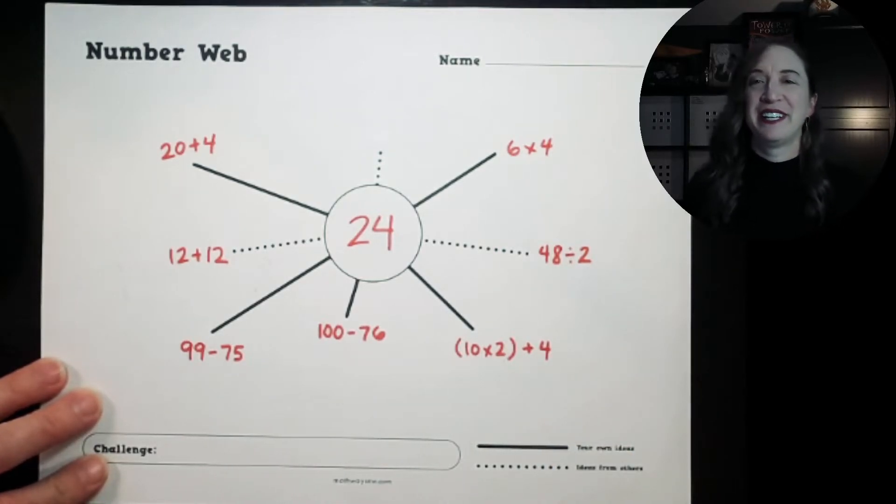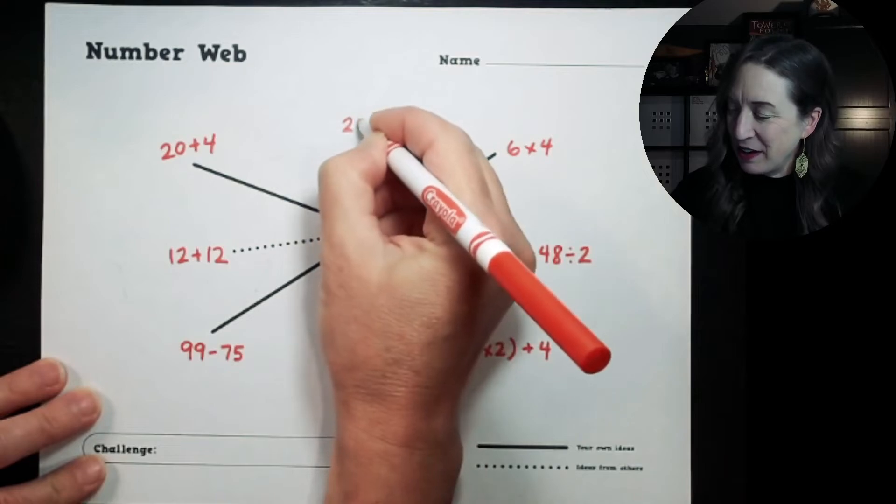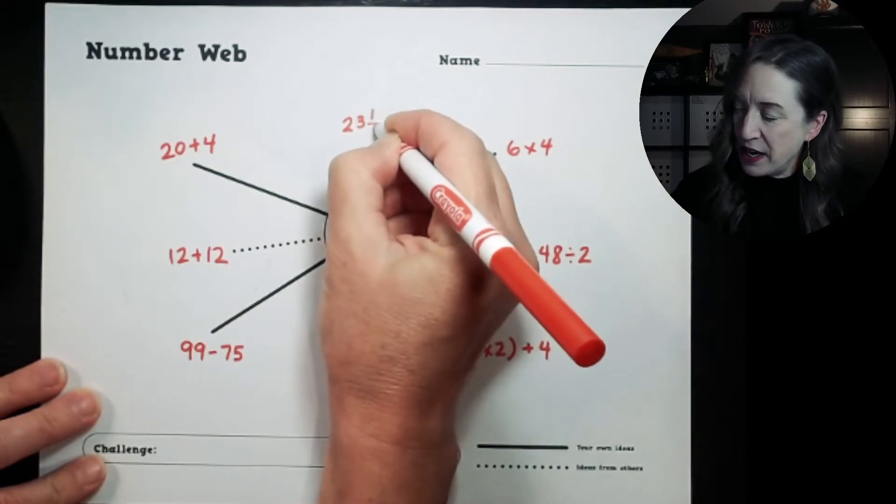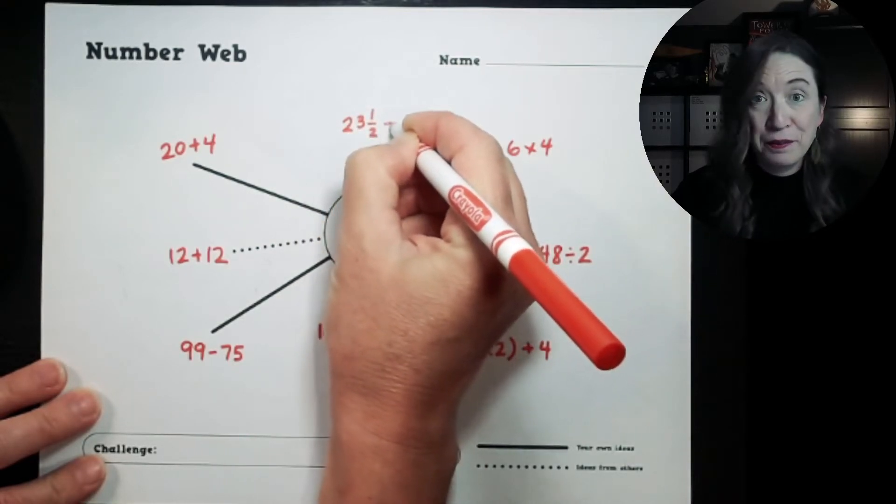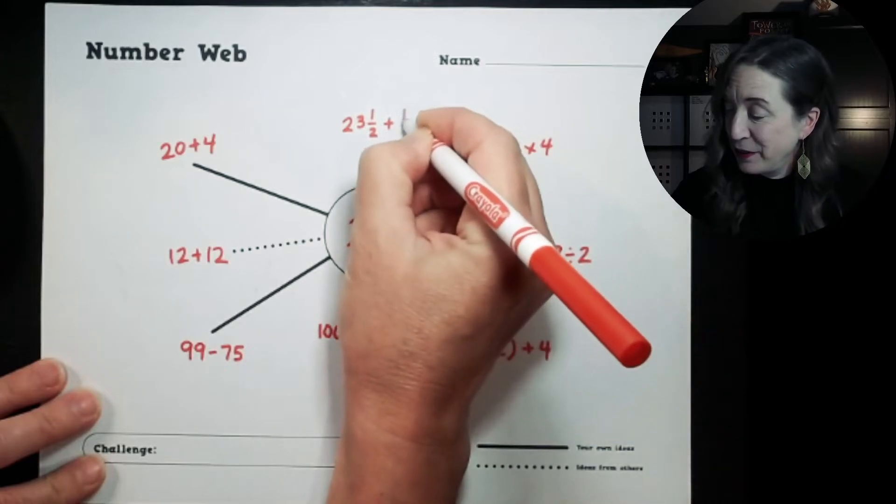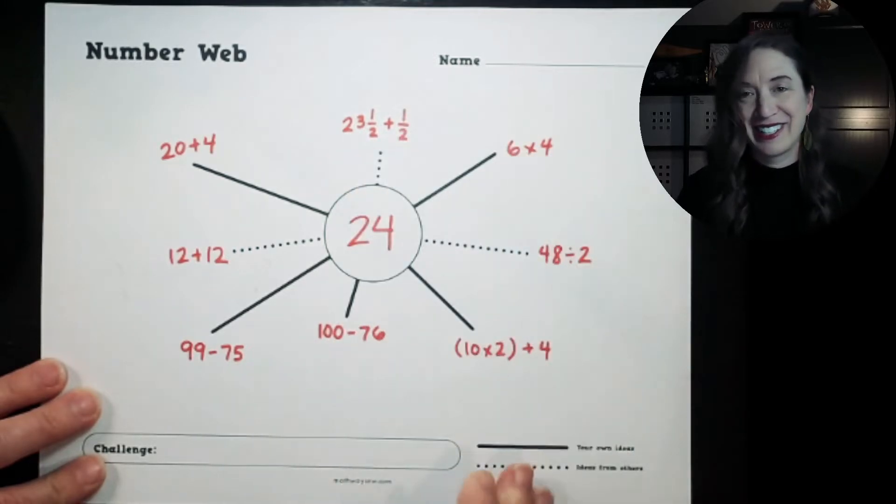I still need one more, so I'm going to go to my last partner at the table. This partner, I'm very impressed, has remembered that fractions can add up to whole numbers as well. This partner has written down 23 and 1 half plus 1 half gets us to 24. That was tricky and it looks pretty impressive.